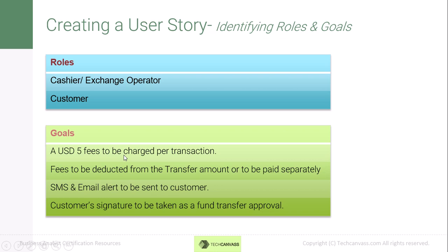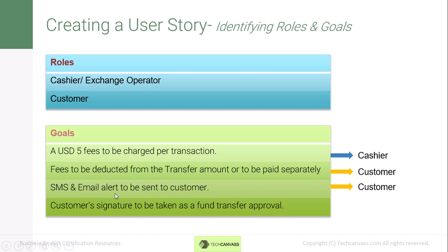The first goal — USD 5 charged per transaction — maps to the cashier, since it is the cashier who charges, not the customer. The second goal — option to pay fee separately or deduct from transfer amount — belongs to the customer, as he wants that flexibility. The SMS and email alert is also a requirement from the customer. Finally, taking the customer signature as fund transfer approval is the cashier's goal, as he needs to ensure the customer signs before making a fund transfer request.